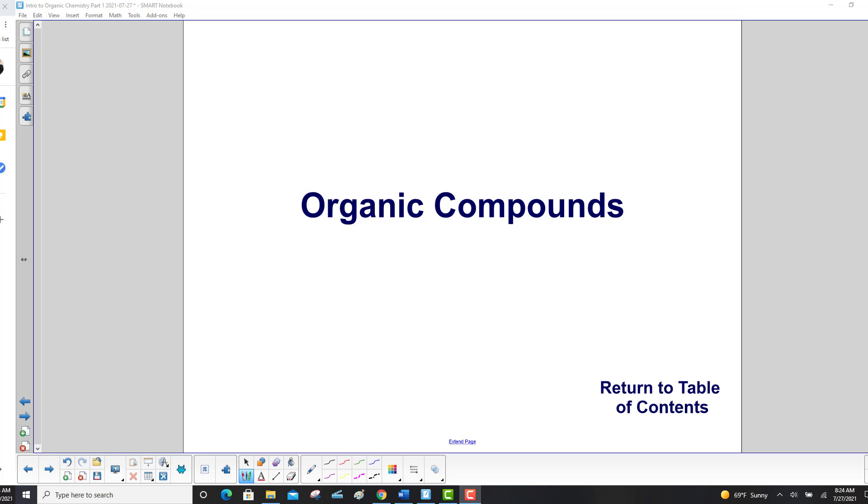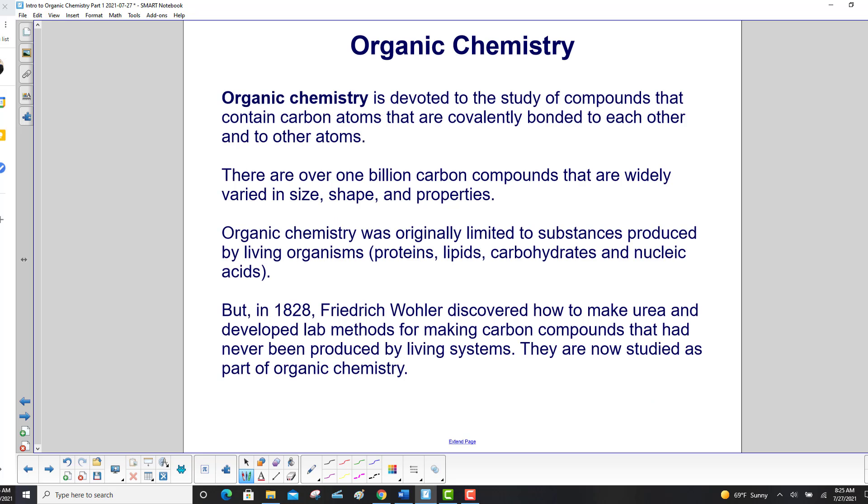Organic chemistry is devoted to the study of compounds that contain carbon atoms that are covalently bonded to each other and to other atoms. There are over one billion carbon compounds that are widely varied in size, shape, and properties.